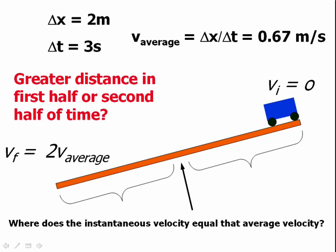We can show, indeed, that it only gets a quarter of the way down the track in the first second and a half. That's where the average velocity and the instantaneous velocity will have the same value.